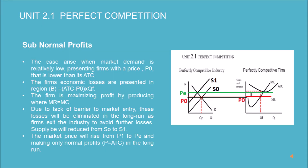Subnormal profits arise when market demand is relatively low, presenting firms with a price P0 that is lower than the ATC. The firm's economic losses are presented in region B, equal to (ATC minus P0) multiplied by Q_f. The firm is maximizing profit by producing where MR equals MC. Due to the lack of barriers to market entry, these losses will be eliminated in the long run as firms exit the industry to avoid further losses.